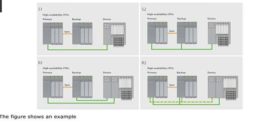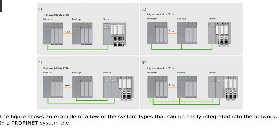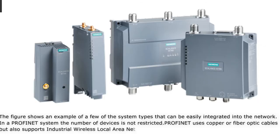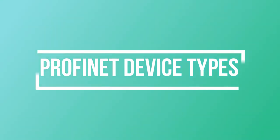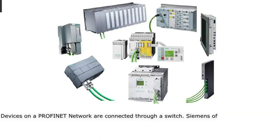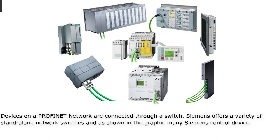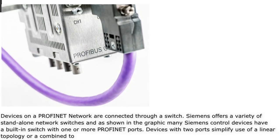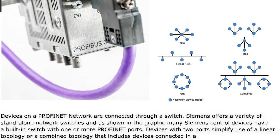The figure shows an example of a few system types that can be easily integrated into the network. In a Profinet system, the number of devices is not restricted. Profinet uses copper or fiber optic cables but also supports industrial wireless LAN communications. Devices on a Profinet network are connected through a switch. Siemens offers a variety of standalone network switches, and many Siemens control devices have a built-in switch with one or more Profinet ports. Devices with two ports simplify use of a linear topology or a combined topology that includes devices connected in a linear manner.